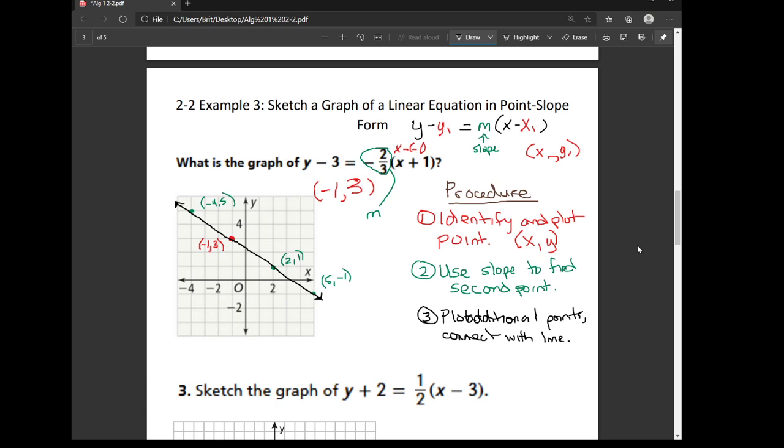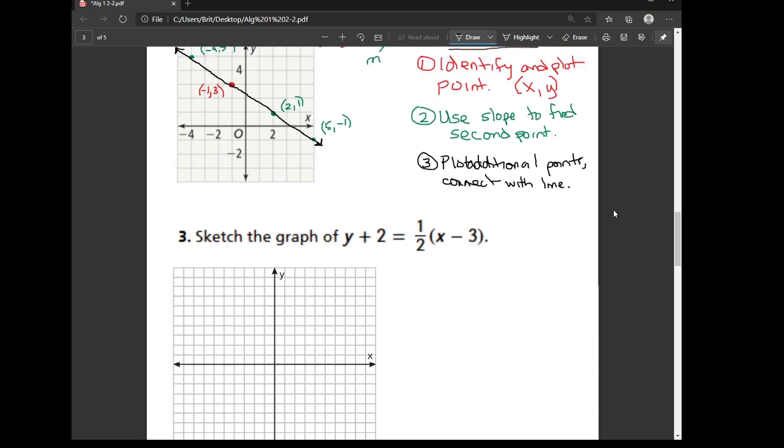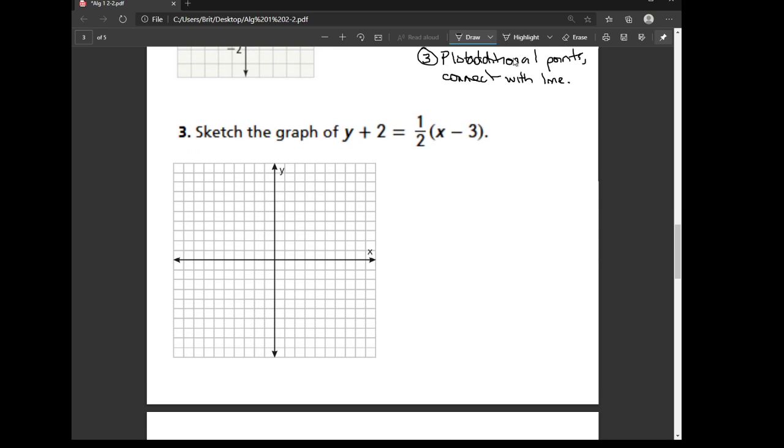Alright, let's go ahead and let's try another example. So from our procedure, remember we need to identify and plot our point. So for my x1 value, I need to look at what number is being subtracted from x. 3 is being subtracted from x, so I'm going to put that there. For my y1 value, it's what number is being subtracted from y. So I can change this to saying y minus negative 2 to find the negative 2. Or just remember to flip the signs.